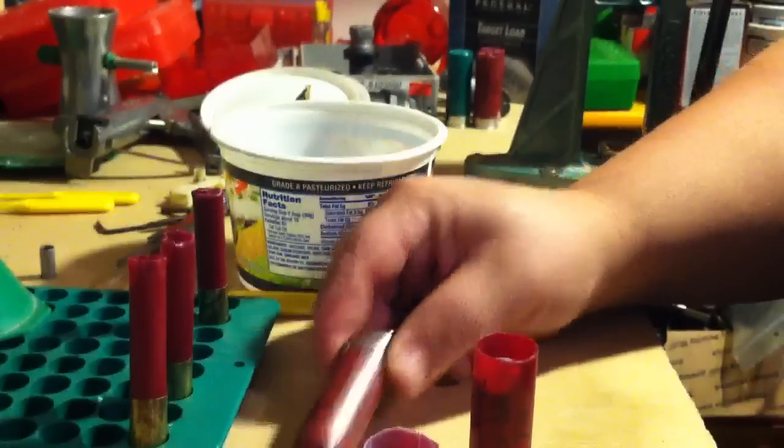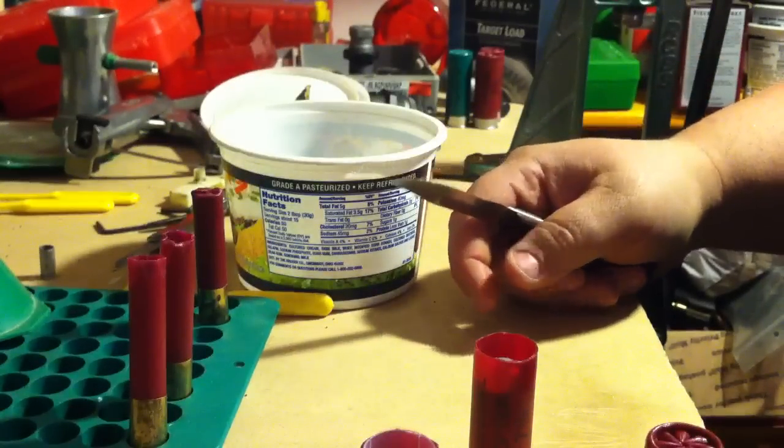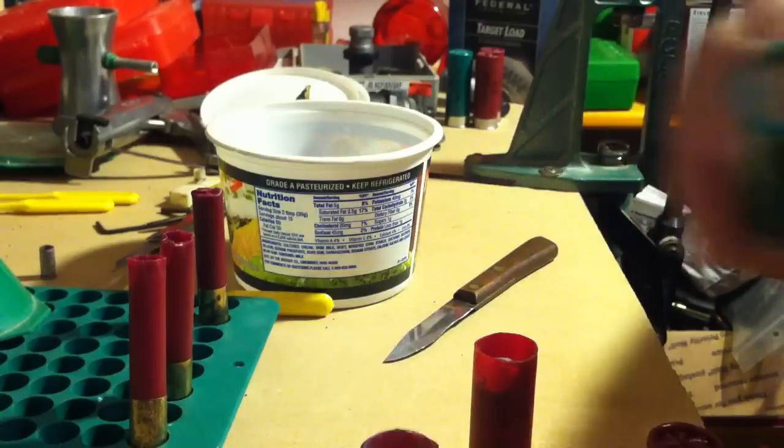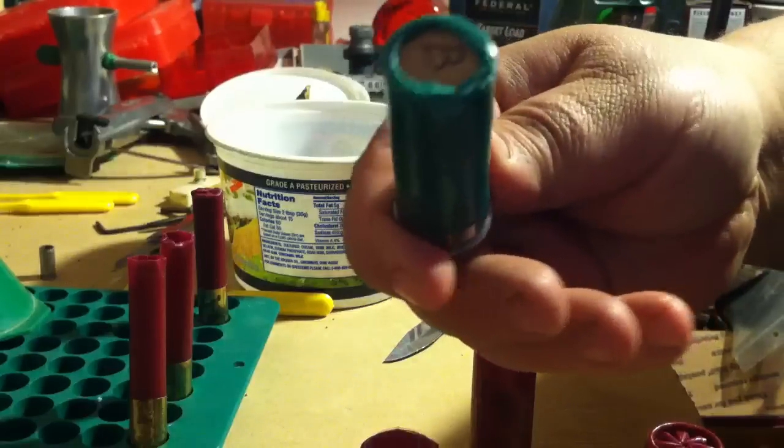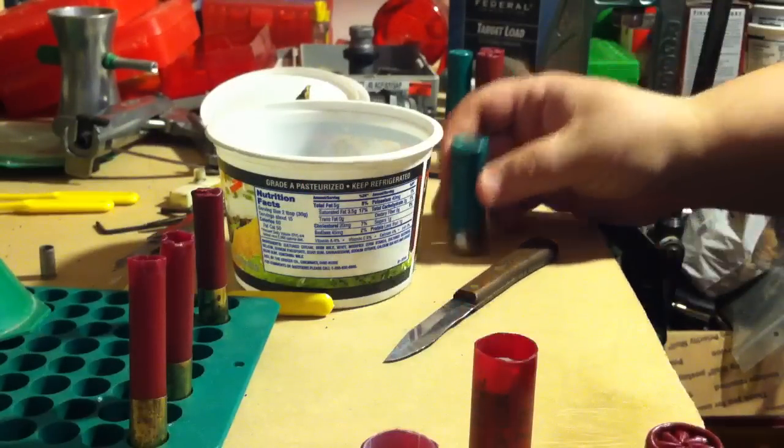Alright guys, we're back at the reloading bench. I wanted to show you my roll crimping jig and how I put a roll crimp on shotshells. Today I'm going to be making a few slugs.